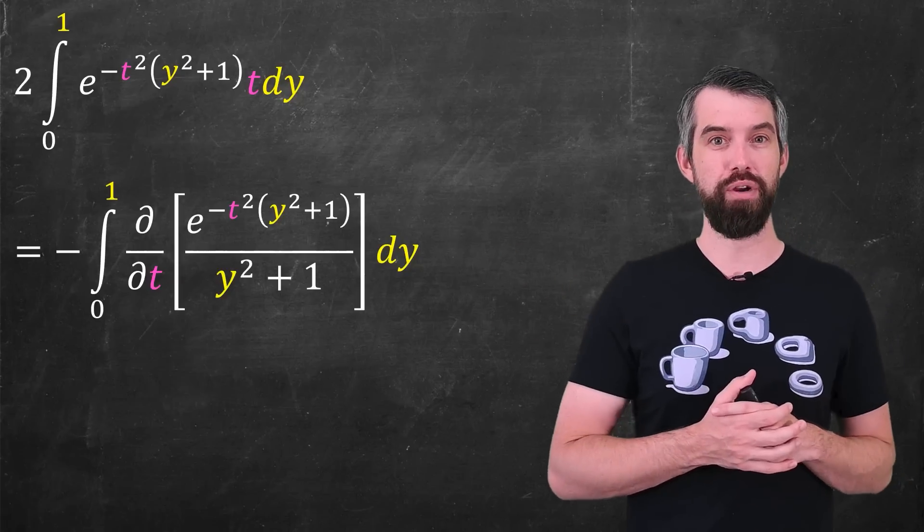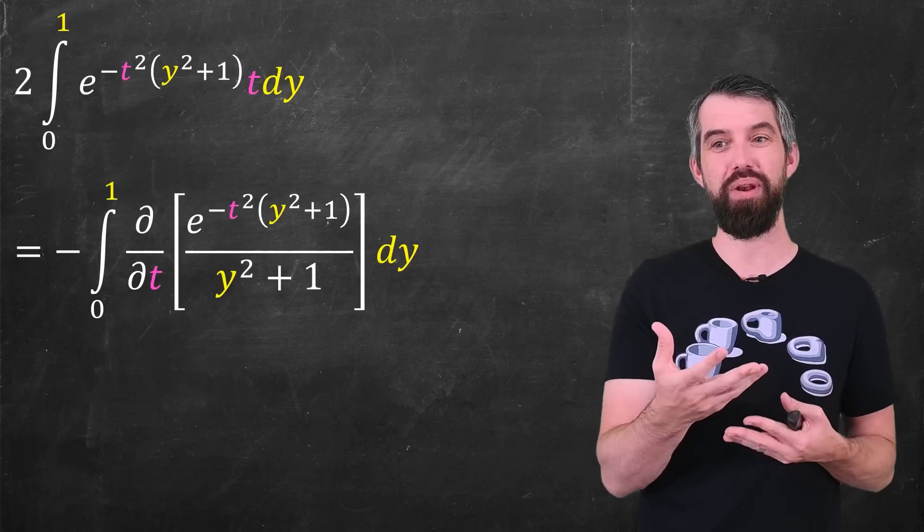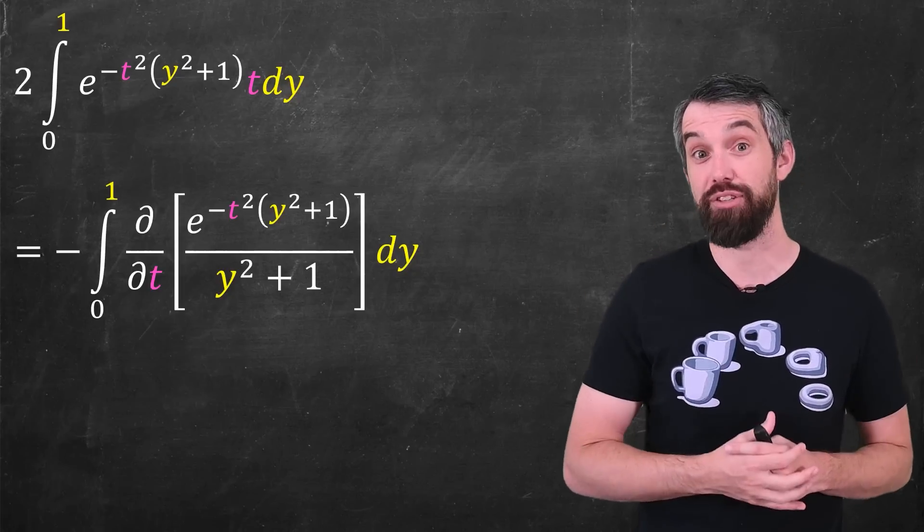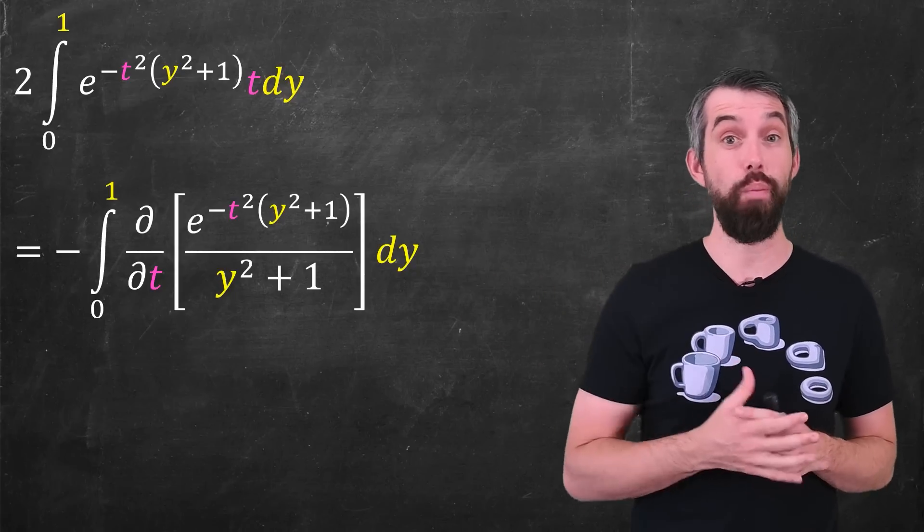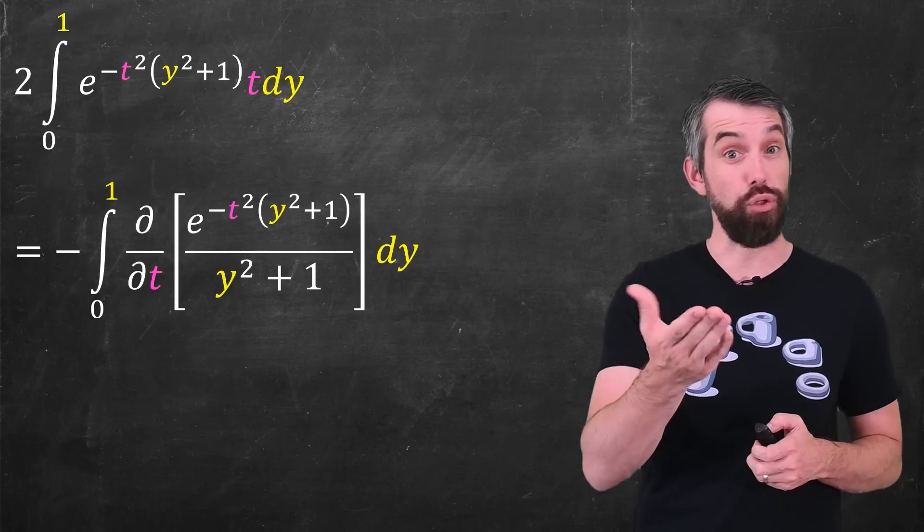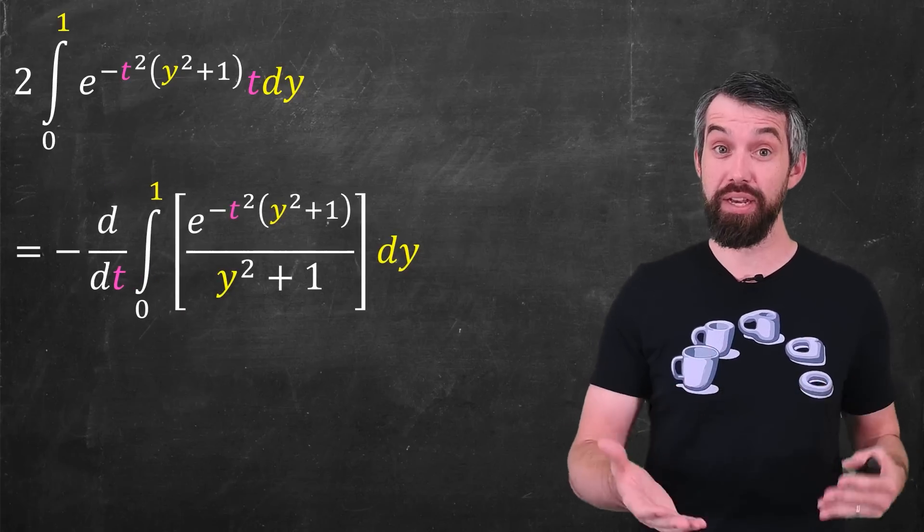Indeed, if you took that partial derivative, a y squared plus 1 would come out the bottom and cancel that denominator. And likewise, the minus signs would cancel and you pick up the extra 2. There are no problem spots in this integral on the domain 0 to 1. I can absolutely take that derivative with respect to t and pull it to the outside of my integral.